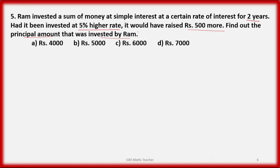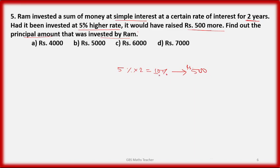Simply thinking: this is a simple interest question. He invested for 2 years. The rate is 5 percent higher. So in year 1 that's 5%, year 2 another 5% — total 10 percent extra over 2 years. If 10 percent of the invested amount equals 500, then the principal is Rs. 5000.